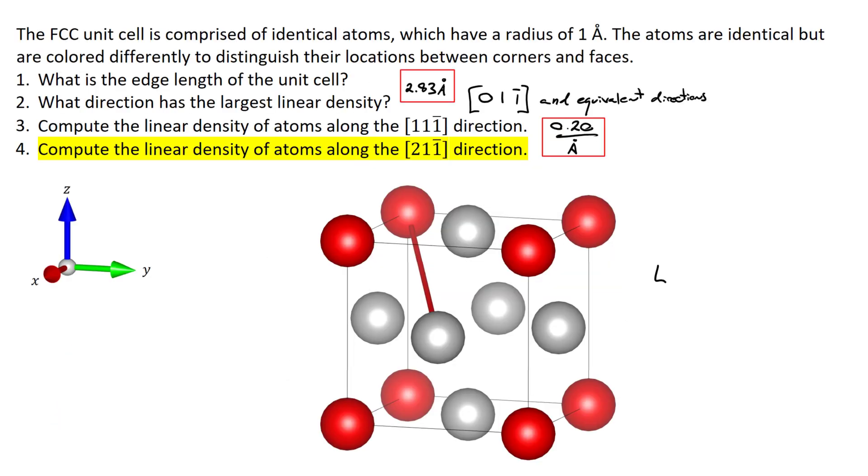So here the linear density, again we only have one atom along the length of that line, and the square of the length of that line, by way of Pythagorean's theorem, is going to be equal to a squared, based on the x direction, plus one half a squared on the y direction, plus another one half a squared in the z direction. This means the length of our line is going to be equal to the square root of 2 multiplied by a.